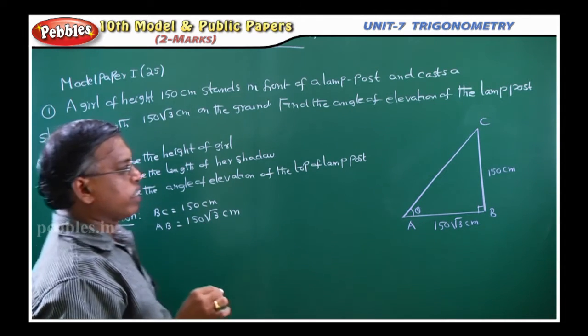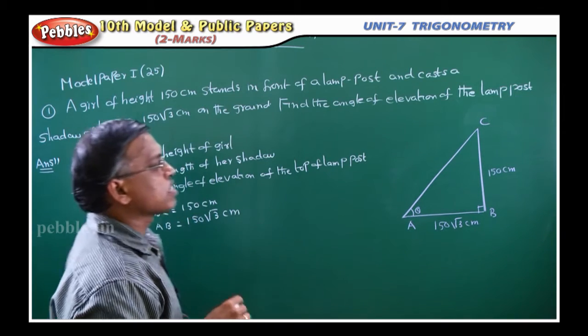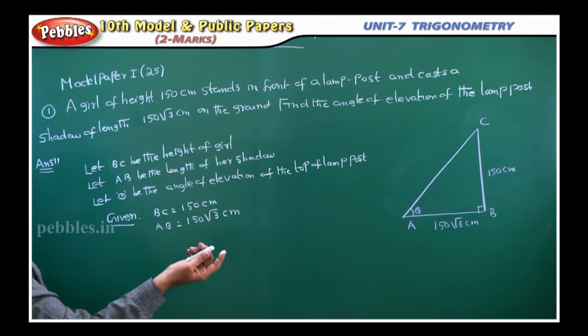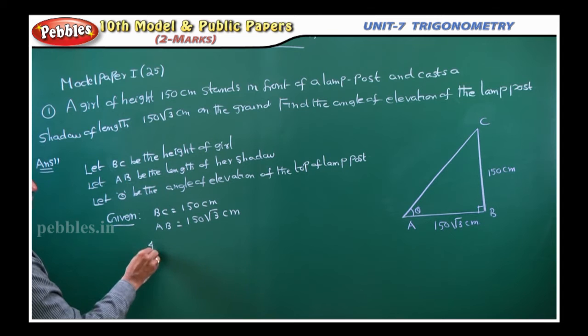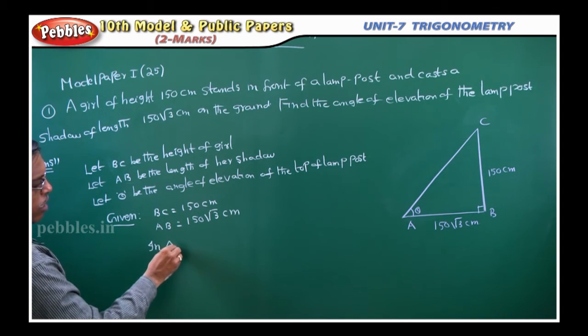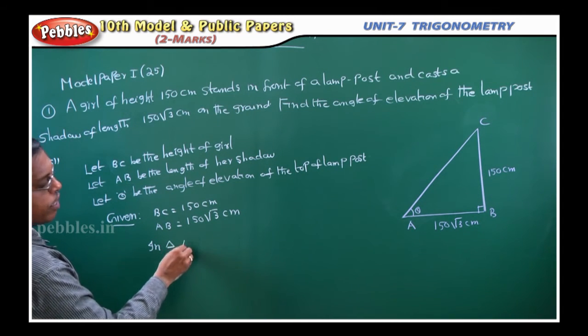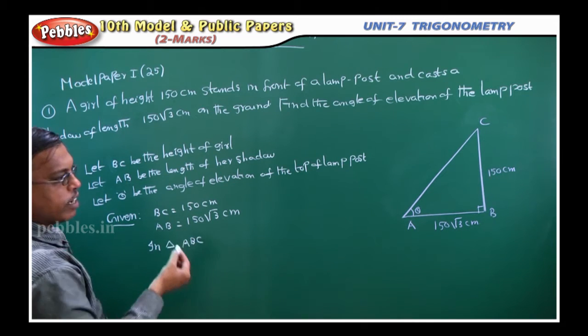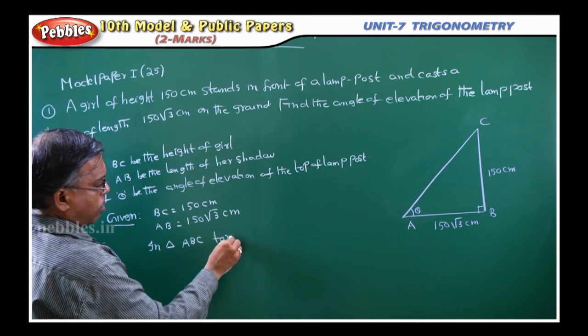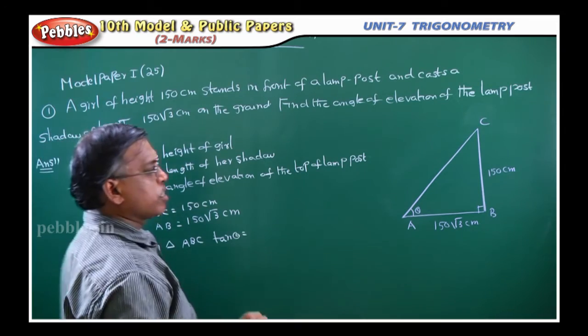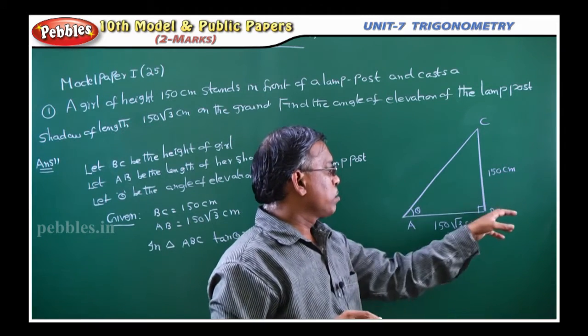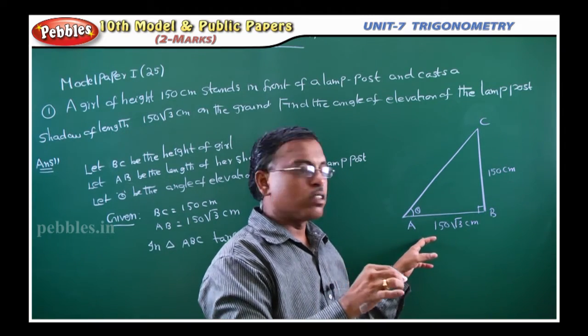Now I want to find this theta. So in this right angle triangle ABC, or CAB, whatever it may be, that does not matter. In right angle triangle ABC, what is tan theta? Tan theta definition is opposite side by adjacent side.